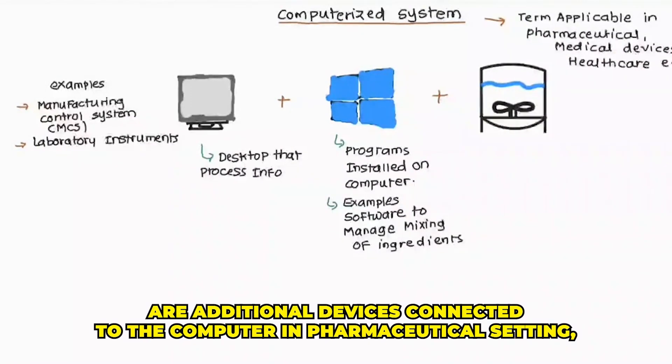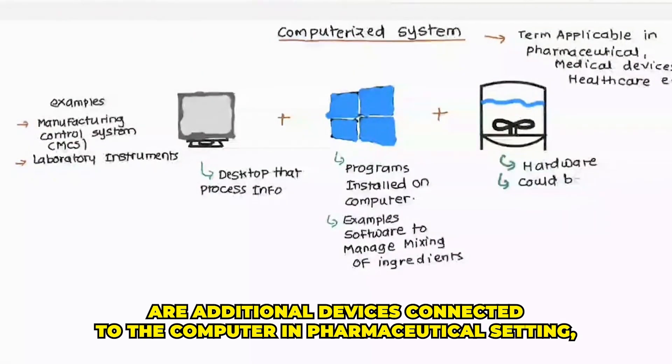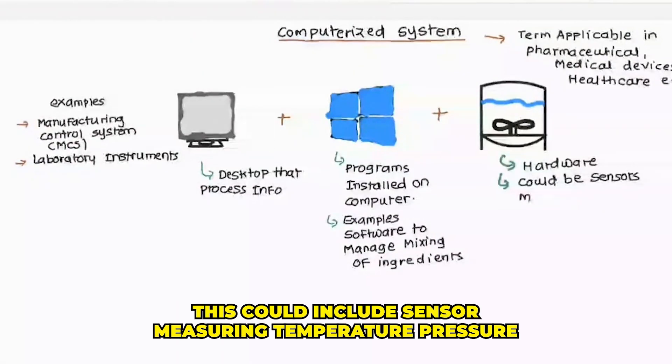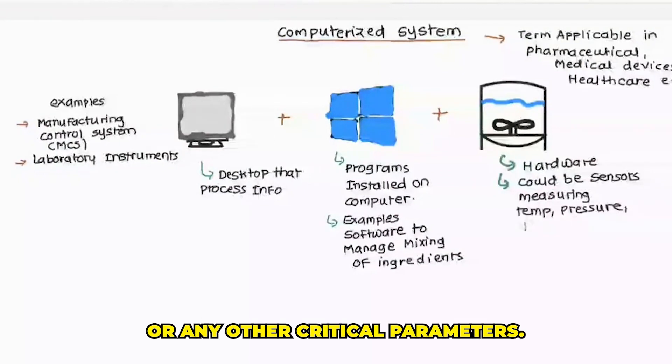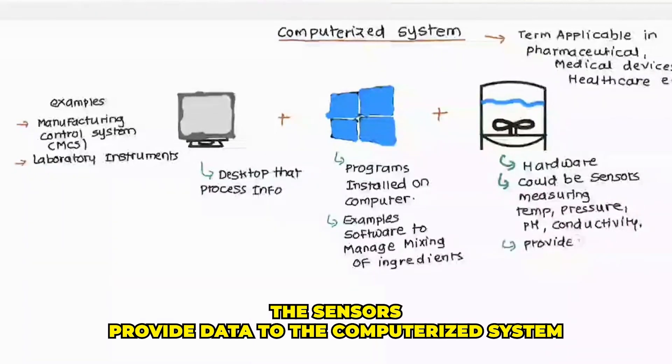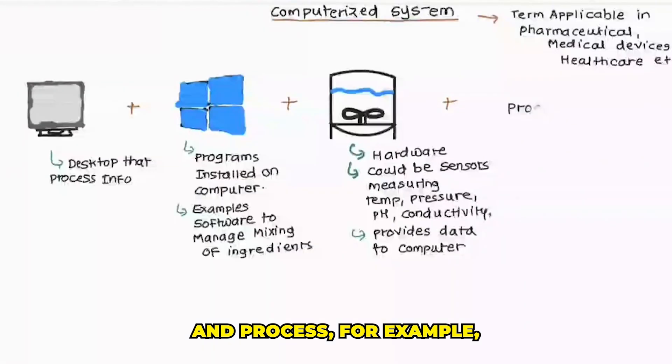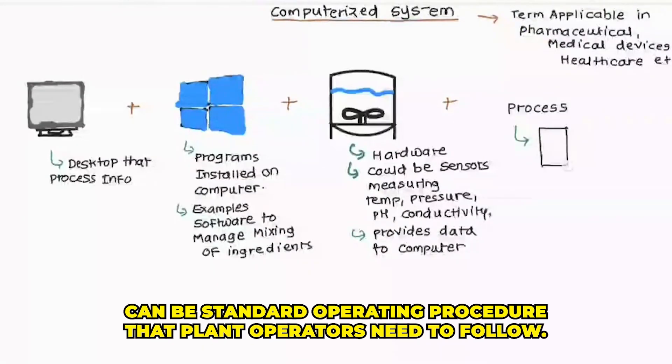Hardware are additional devices connected to the computer. In pharmaceutical setting, this could include sensors measuring temperature, pressure, or any other critical parameters. The sensors provide data to the computerized system. And process, for example, can be standard operating procedures that plant operators need to follow.